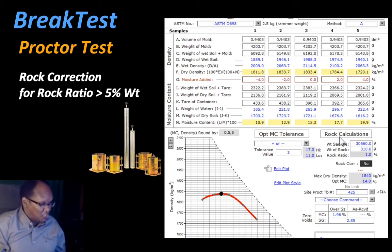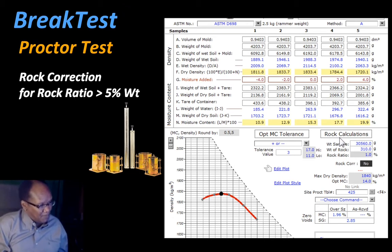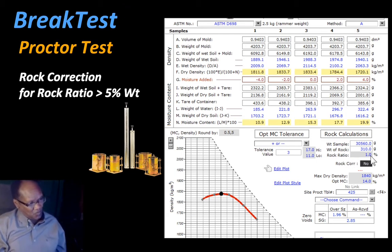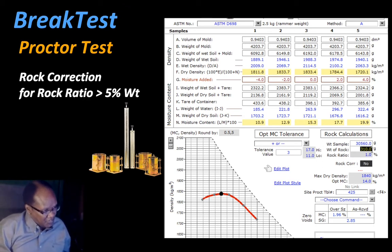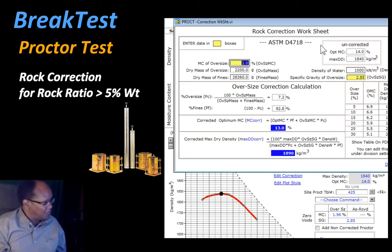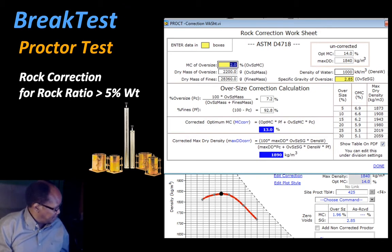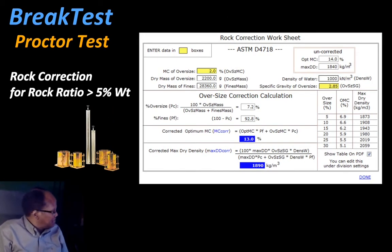In the current example the rock ratio is 1%, which does not qualify for rock correction. But if I change this number — say I use 2200 — then the rock ratio will exceed 5%, and therefore the tool will pop up, as you can see right there.